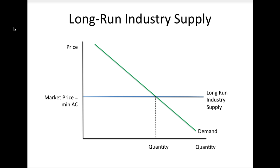By the previous reasoning, in a competitive market, the long-run supply curve will simply be a horizontal line at the market price. This price will be equal to the minimum of average cost of the firms in the industry. Note that it is not unreasonable to assume that all firms in this industry will have a similar cost structure. You should think about what the incentives would be if one firm had a cost structure that was either better or worse than the industry standard.